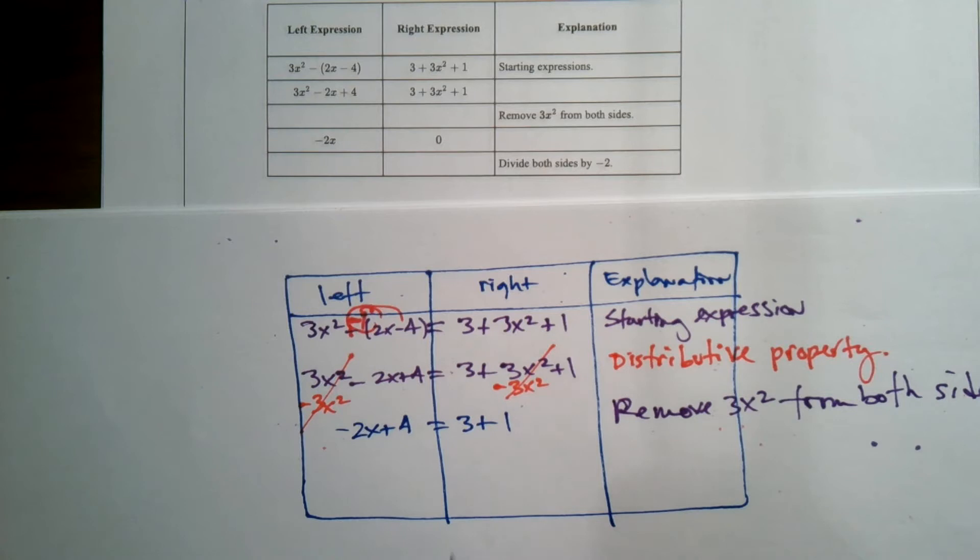So then the next thing is they have written, a -2x. So the next thing they've got written is -2x and 0. So I'm going to keep the equal sign going. So the -2x is 0. So what did they do? That's what they want us to write here. What did they do?